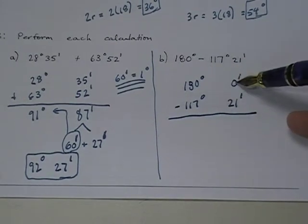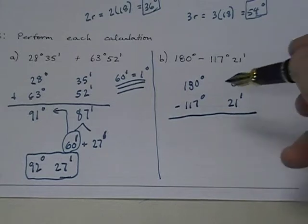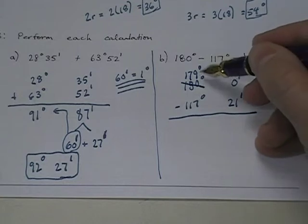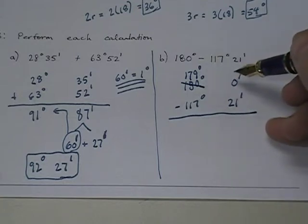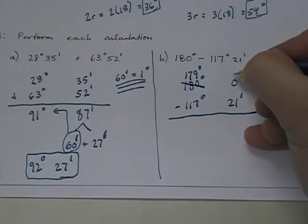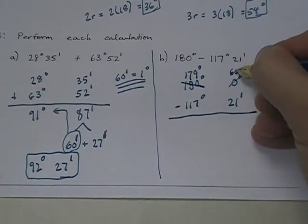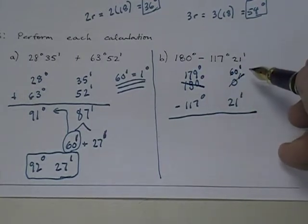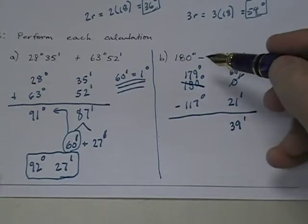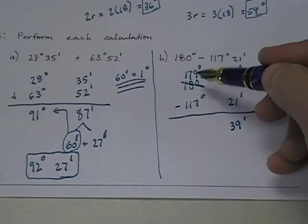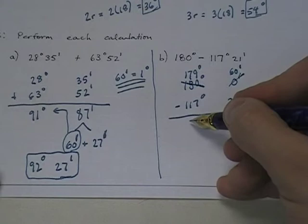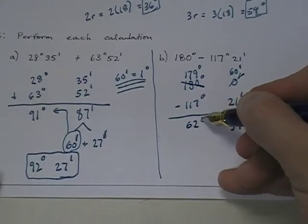And very similar to elementary school subtraction, I can't take 0 and take 21 away from it. So what I have to do is I have to borrow. So I say this is 179 degrees. I'm going to borrow one degree. But 1 degree, remember, is equal to 60 minutes. And so this becomes 60 minutes. So then I say, what's 60 - 21? It's 39 minutes. And what's 179 - 117 is 62 degrees.